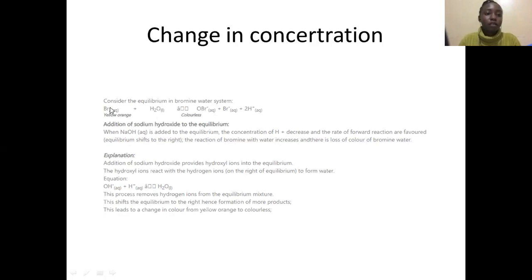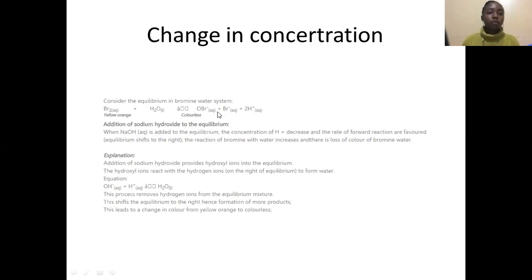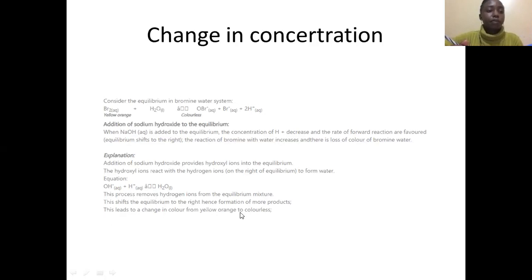Therefore, the equilibrium shifts towards the right — to the side where the change has been introduced — so that it produces more hydrogen ions to replace those used up. The observation will be a color change from yellow-orange to colorless, because more of the reactants will react to form the products. The process removes hydrogen ions from the equilibrium mixture, shifts the equilibrium to the right, hence formation of more products, leading to a color change from yellow-orange to colorless.